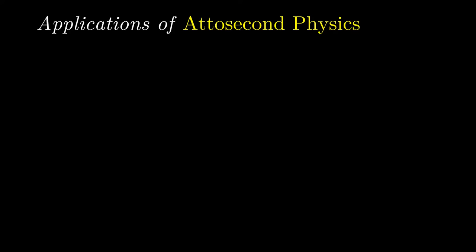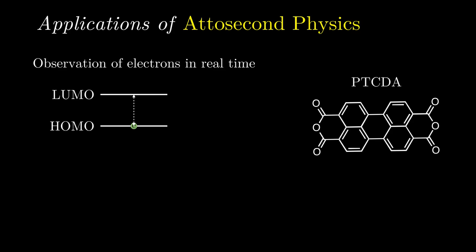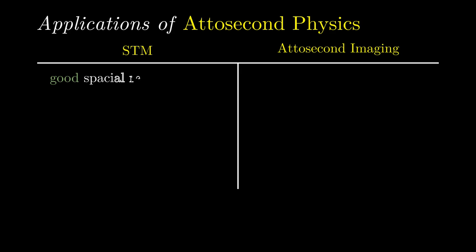Another application of attosecond physics is the direct observation of electronic motion in real time. A paper published in late 2021 demonstrated that it was possible to observe the oscillation of electronic density between the HOMO and LUMO of the organic molecule PTCDA. They used the scanning tunneling microscope, or STM, to image the distribution of electrons in molecules using quantum tunneling. An STM gives fantastic spatial resolution, but offers relatively poor temporal resolution.